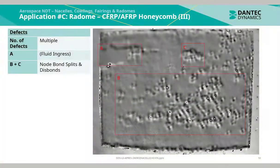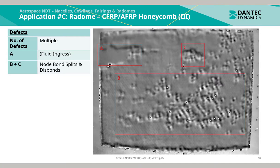There are multiple defects detectable from the phase display. A is an indication of fluid ingress. C and B are multiple indications of no-bond splits and both localised and global disbonding between the skin and the core.